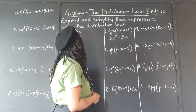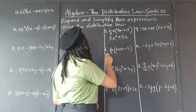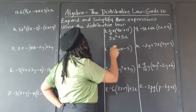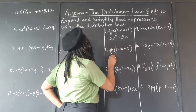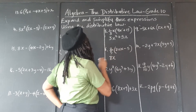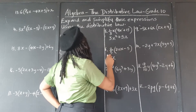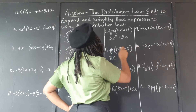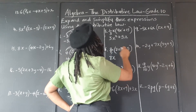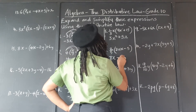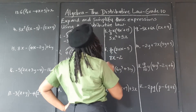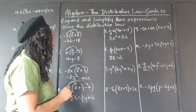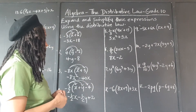2 fifths of 20: 5 goes into 20 four times, 2 fours are 8, so that's 8x. 2 fifths times negative 5: 5 into itself once, 2 once is 2, that's negative 2. So it's 8x minus 2.